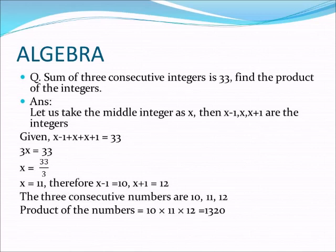We have found x equals 11. It is now easy to find the previous and next numbers. The previous number is x minus 1, which equals 11 minus 1, equal to 10. The next number is x plus 1, which equals 11 plus 1, equal to 12. So the three integers are 10, 11, and 12.